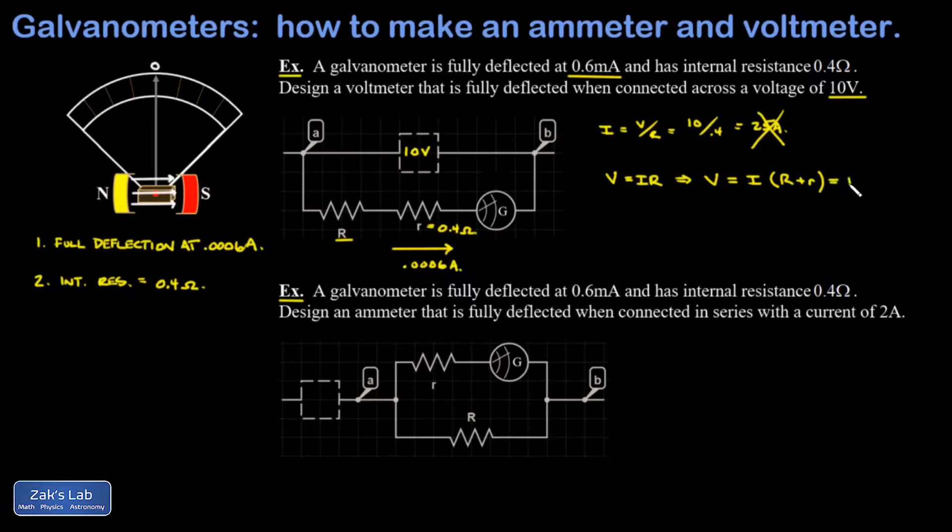I'm going to solve everything symbolically here, and subtracting the I little r from both sides, I get that my big R required is V minus I little r divided by I.